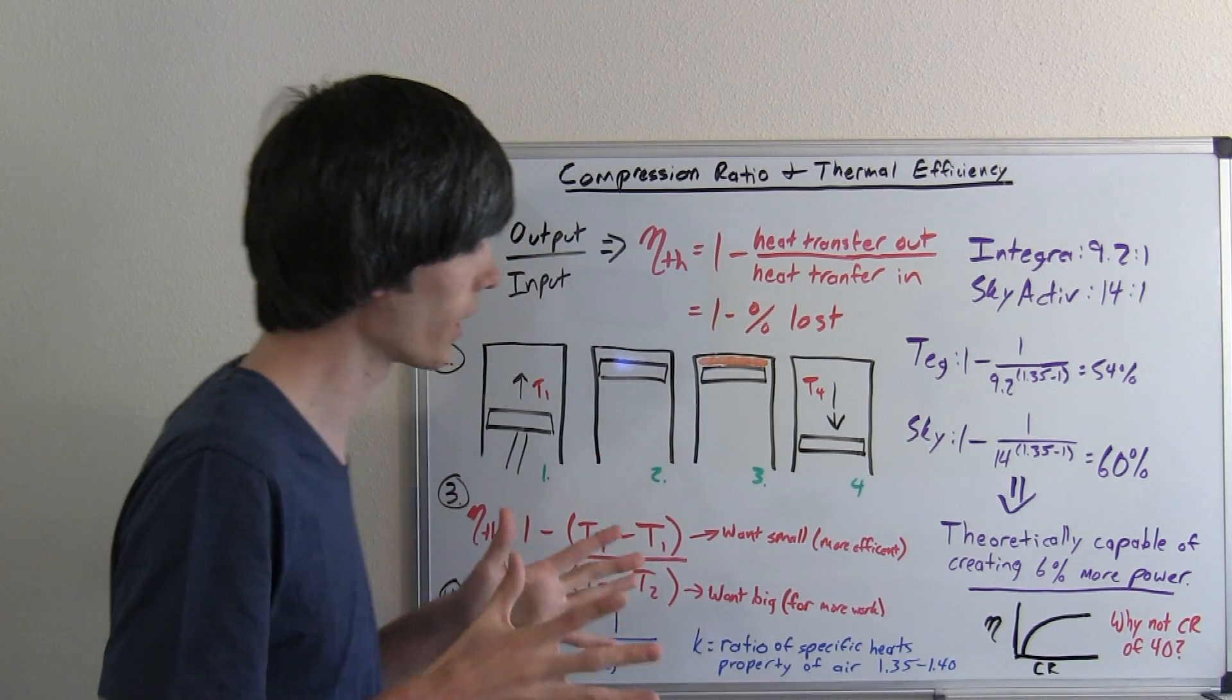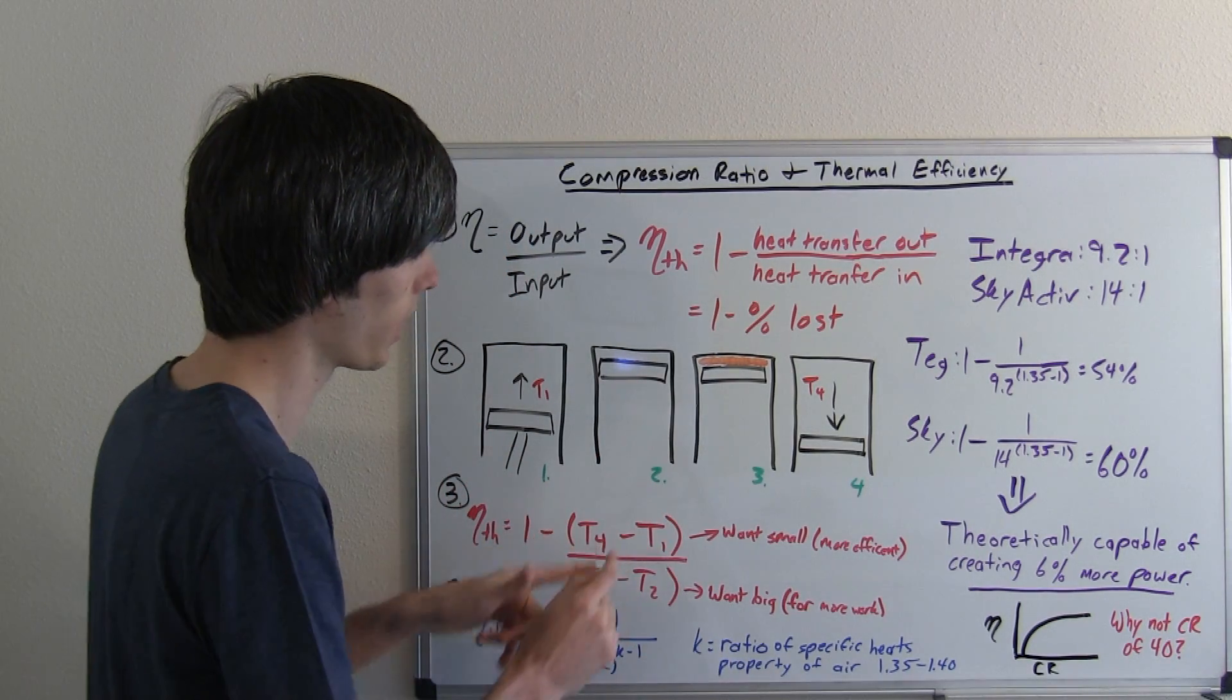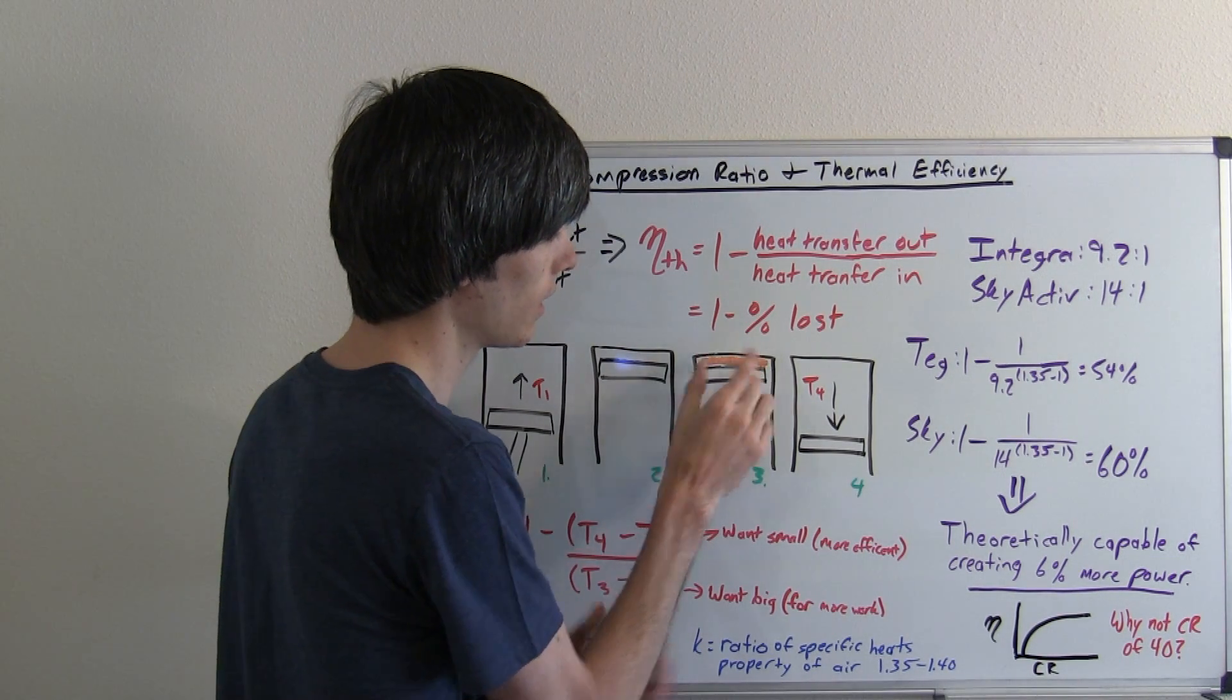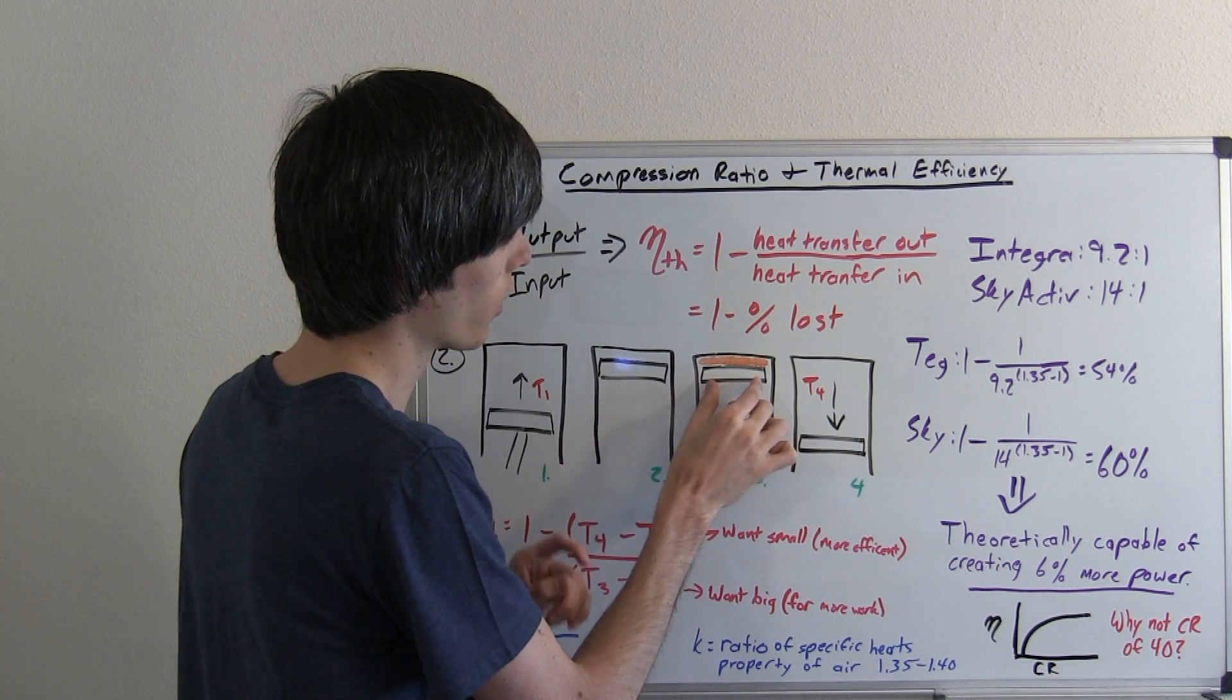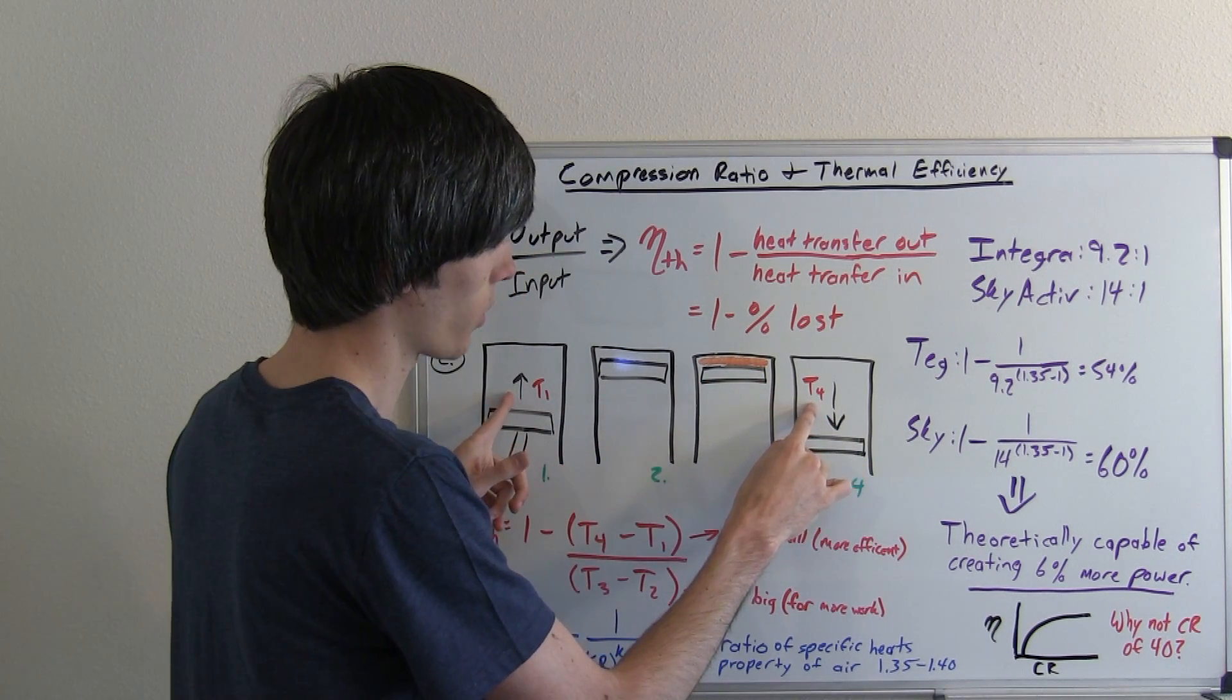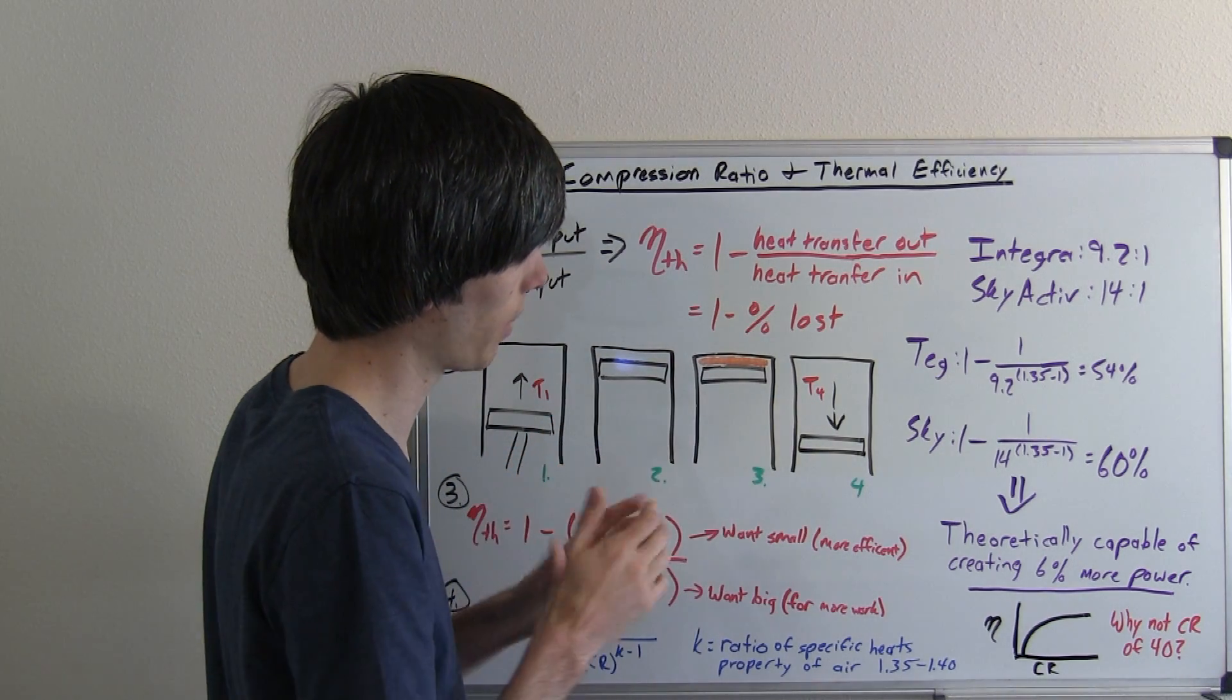So theoretically if it was 100% efficient and these two temperatures were the same, then what would happen is once you have combustion, all of that heat, literally every bit of it, goes into forcing this piston down and T4 is the same temperature as it was before this compression and power stroke occurred.